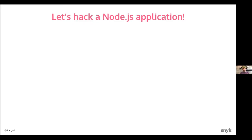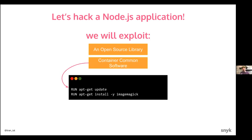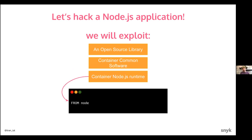Let's go into a live session where I'll take you through exploiting an open source library called marked — a Markdown library used in a to-do application. We're going to hack an application based on a vulnerable dependency in it. We'll also hack based on a vulnerable ImageMagick dependency on the container itself, and then show how we can hack based on a vulnerability in the Node.js runtime itself. Feel free to use the Q&A box to submit questions, and I'll try to monitor that during the live hack.